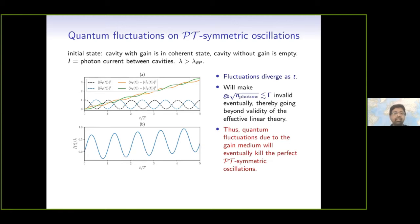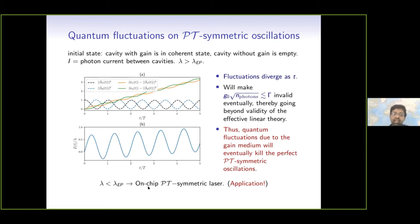For lambda less than lambda_EP, this condition is violated almost immediately. But we have a very interesting application: since we are talking about something on-chip, this circuit QED double quantum dot system is an on-chip device. What we can have is an on-chip PT-symmetric laser, with the usual behavior of one mode being exponentially attenuated and the other being exponentially amplified. So this can be one application.